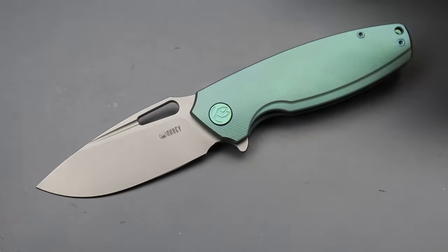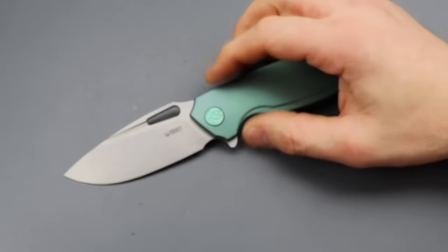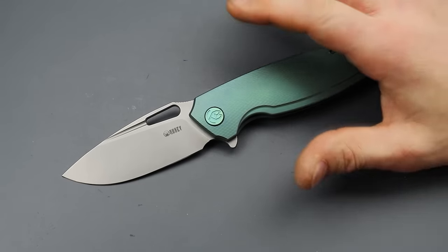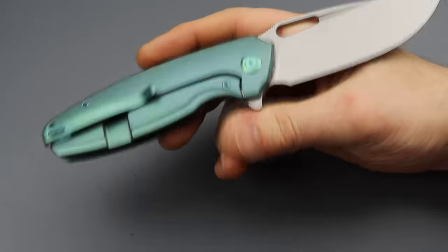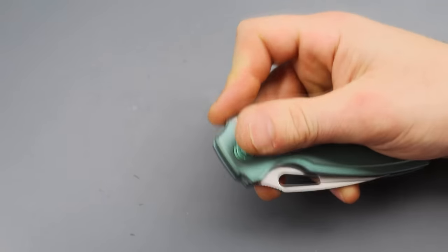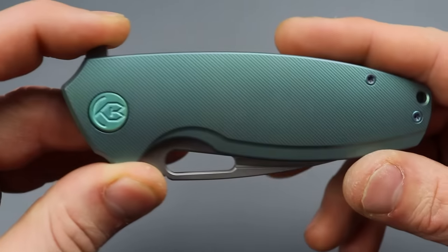Next. Honestly, this one could probably be number one. I'm going to be honest. The Kubi Tidious. Now, some people argue, I thought you weren't putting in knives that existed before. I'm not. This is a frame lock version. So, to me, that's enough of a difference.